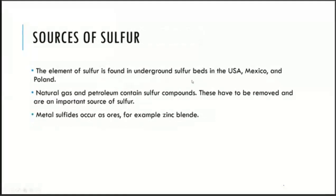The sources of sulfur: sulfur is found mainly in underground sulfur beds in the USA, Mexico, and Poland. Natural gas and petroleum contain moderate amounts of sulfur compounds; these have to be removed and are also an important source of sulfur. Metal sulfides occur as ores, and one example of this is zinc blende. You should know this already in terms of the extraction of metals, and if you don't, you should go and revise that as well because they tend to ask you a lot about that in exams.